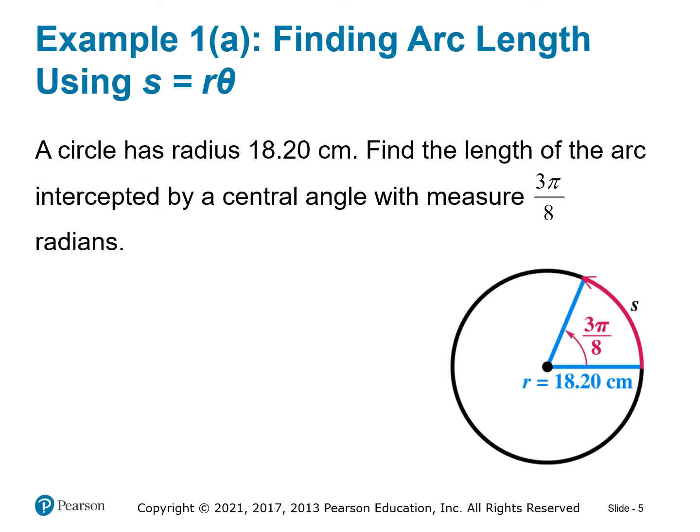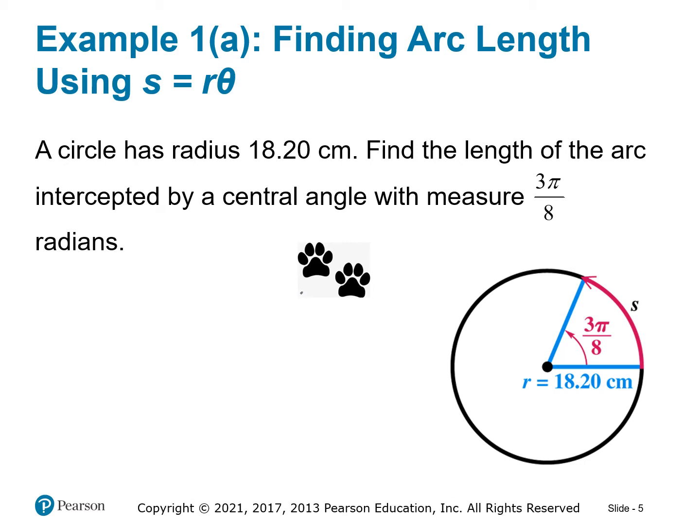Example: a circle has a radius of 18.2 centimeters. Find the length of the arc intercepted by a central angle with measure 3π/8. Using arc length equals radius times theta, the radius is 18.2 and the angle is already in radians, so arc length equals 18.2 times 3π/8, which is approximately 21.44 centimeters.